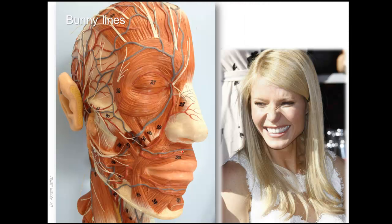Bunny lines appear on the lateral and dorsal aspect of the nose and may extend to the lower eyelid. They are caused by contraction of the nasalis muscle. Injections are given on the lateral side of the nose into the nasalis compressor, but should be limited to avoid levator labii superioris alaeque nasi, because if that muscle is affected it might cause slight ptosis of the upper lip, as its fibers attach to the upper lip.